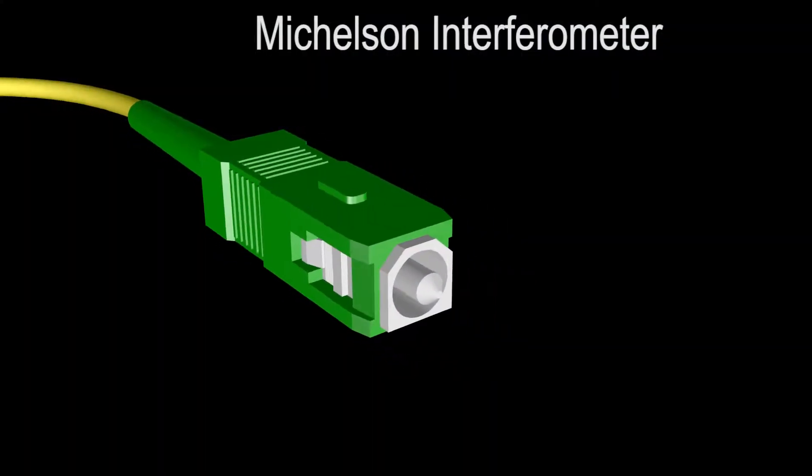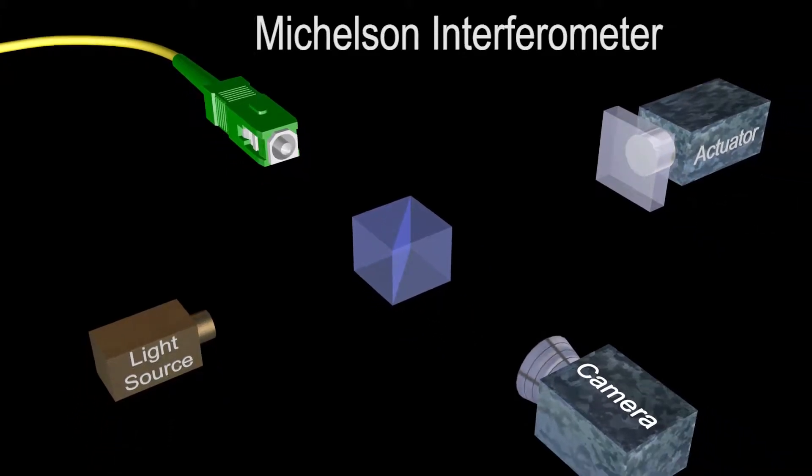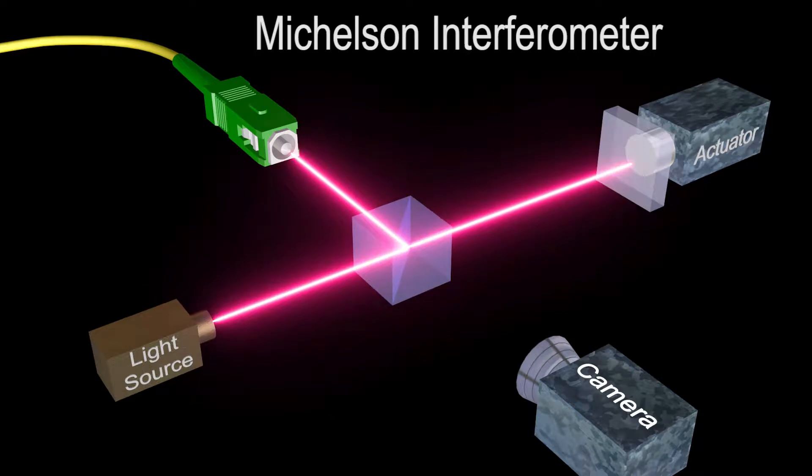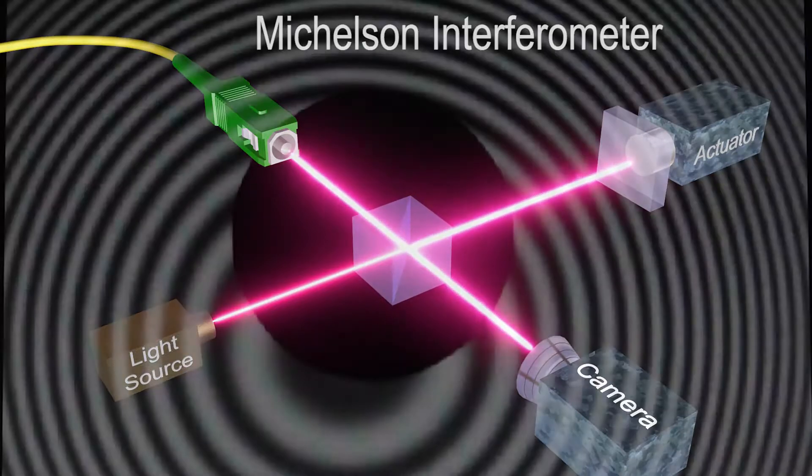Michelson interferometers form interference fringes by dividing light from a source into two beams using a beam splitter. One beam bounces off a reference mirror, the other reflects from the connector end-face. The beams are then recombined by the beam splitter and imaged onto a camera, where interference fringes become visible. The circular fringes are like the contours of a topographical map.